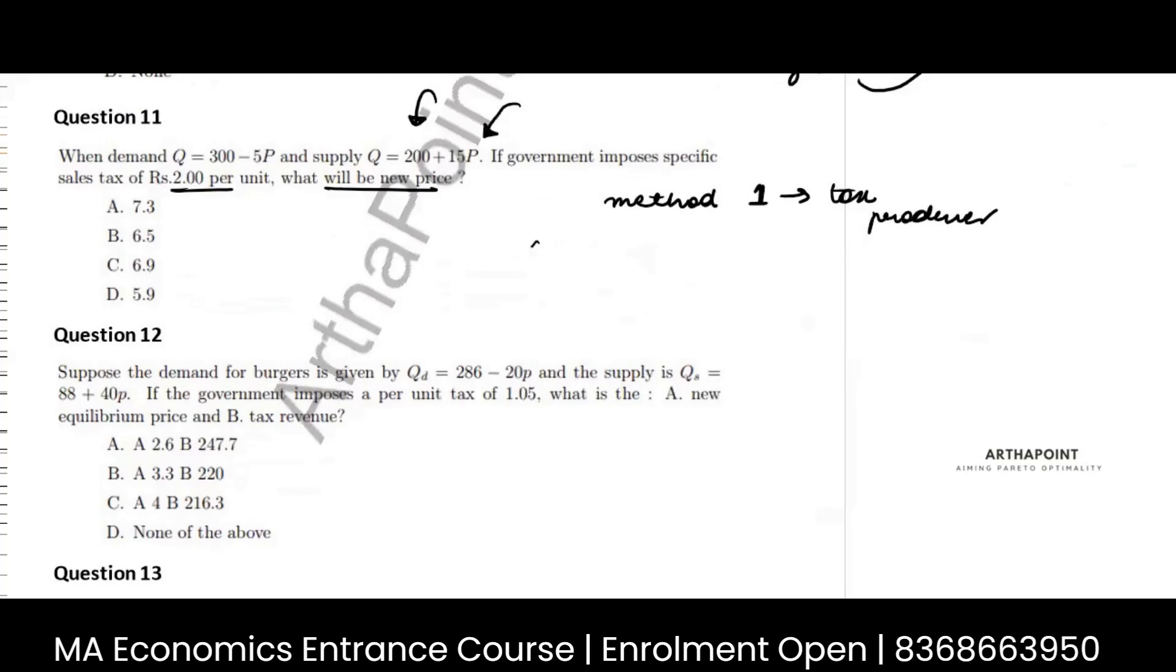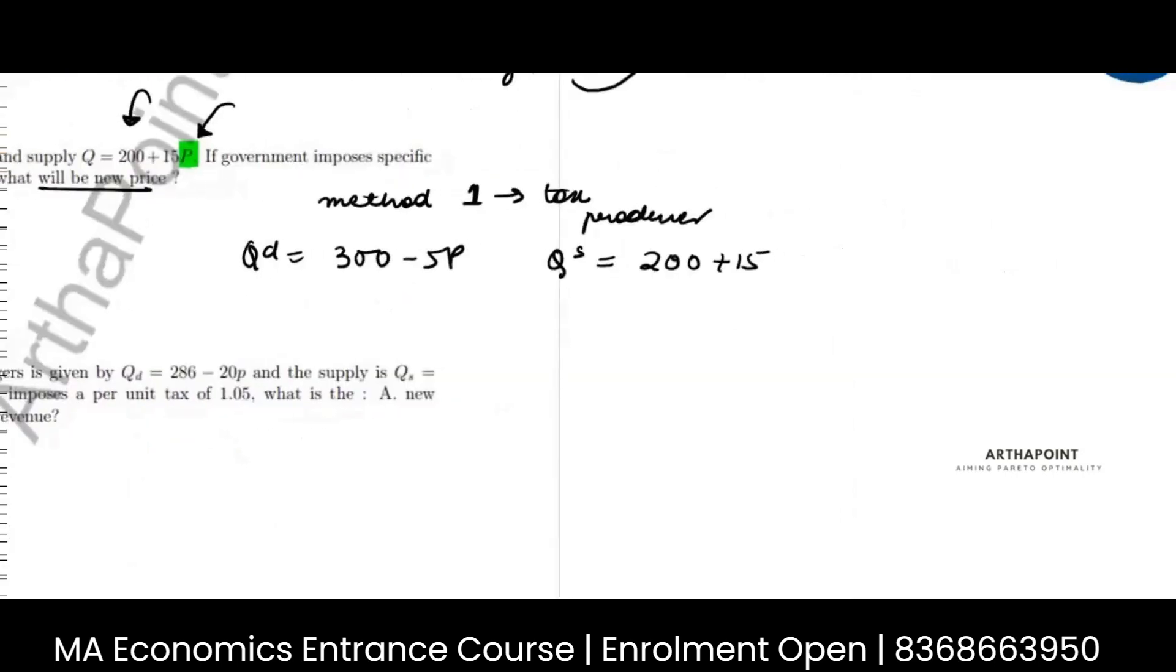I will have quantity demanded as 300 minus 5P, quantity supplied as 200 plus 15P. And instead of this P, I will write P minus 2.